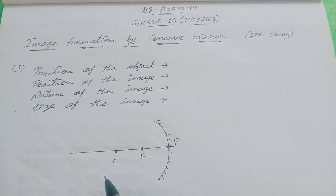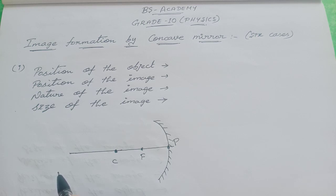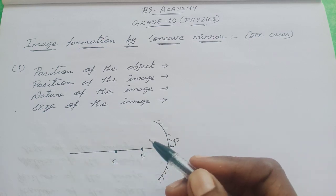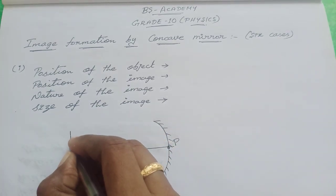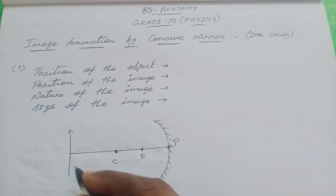We have drawn the concave mirror. This is the reflecting surface, P is the pole of the reflecting surface, this is the center of curvature, and this is the principal focus. We are going to place the object on the left-hand side, in front of the reflecting surface of the mirror. We are going to place the object first at the distance of infinity, so consider this arrow mark as the object at infinite distance.